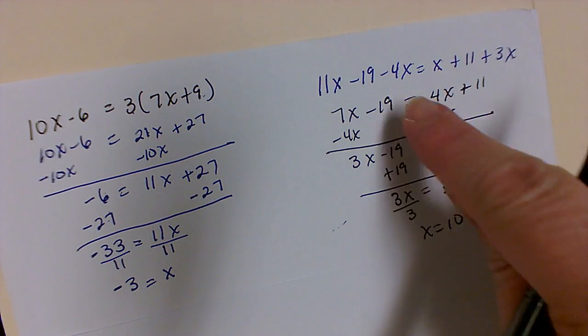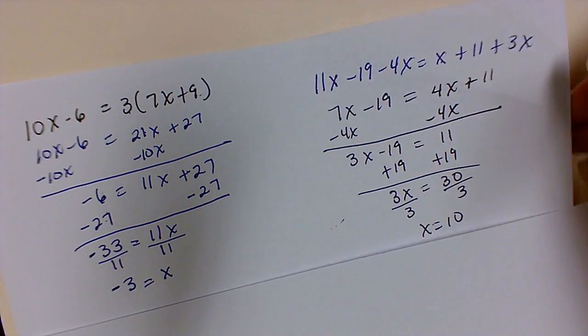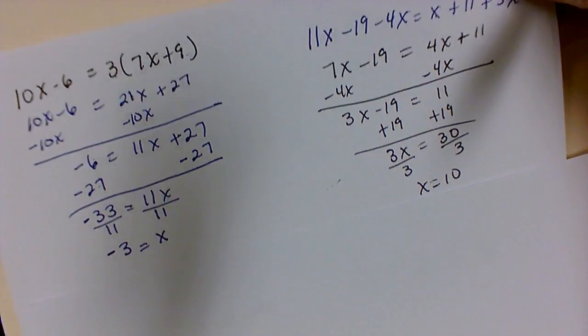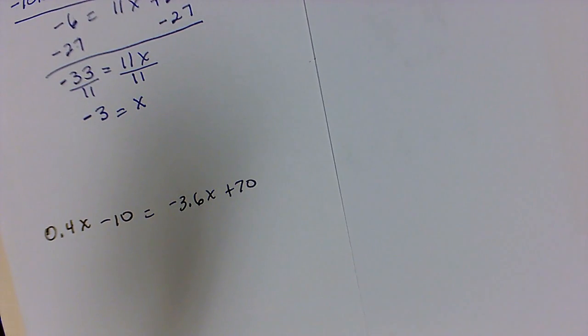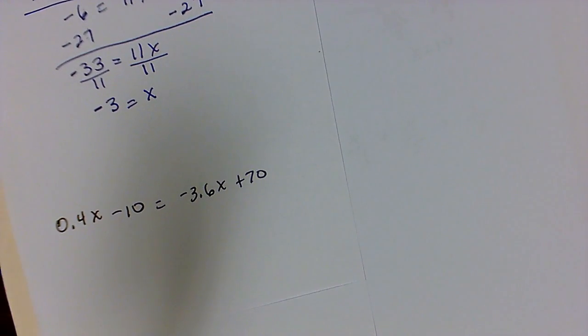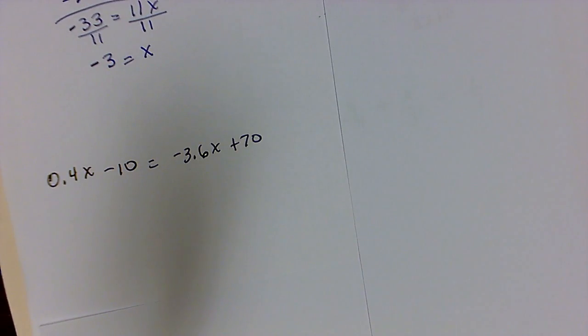Remember, you can always plug these back into the original equation to check and see if your math is correct. So the next problem we're going to look at has a decimal. As we look at the problem with the decimal, it's easier if you clear this decimal. Now in problems where we don't have an equal sign, we can't clear it. We have to just combine them together.